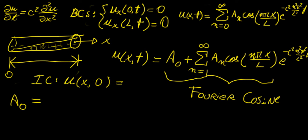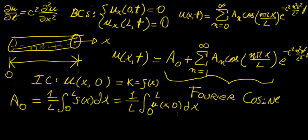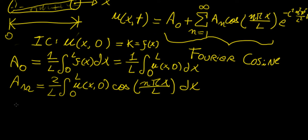Let's say the initial temperature or heat distribution is just a constant k. So we have a constant temperature distribution to begin with. We know a₀ has the form 1 over l from 0 to l of f(x) dx, where the initial condition u(x,0) goes in here. And the a_n are 2 over l of the integral from 0 to l of u(x,0) times cosine(nπx over l) dx — the cosine series.